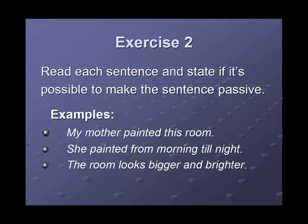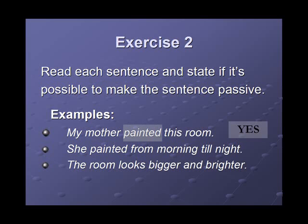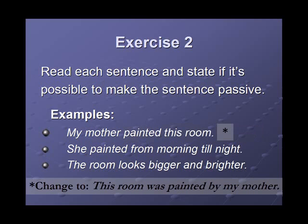Exercise 2: read each sentence and state if it's possible to make the sentence passive. First: my mother painted this room. Is it possible? Yes. The verb is 'paint' and the object is 'this room,' so we can make it passive: this room was painted by my mother.